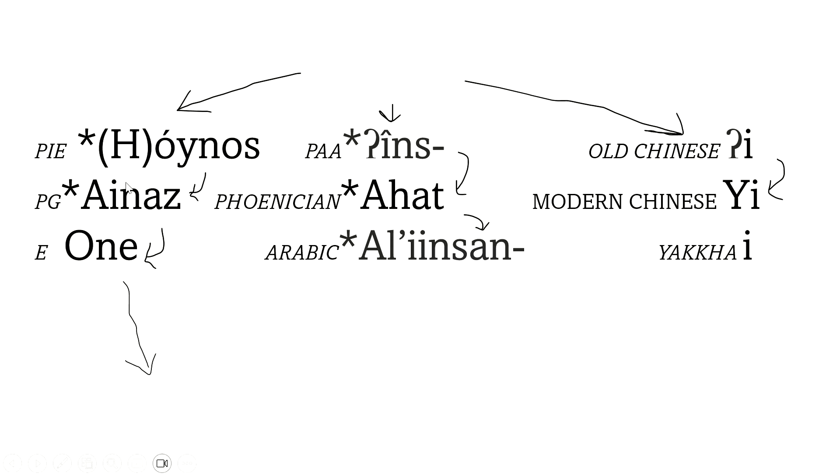And then Phoenician and Arabic from Proto-Afro-Asiatic, and Old Chinese and Modern Chinese from Old Chinese. And you see I've drawn these arrows here, and they all go to one seemingly one thing. And this thing is my own guess of what all these words came from.